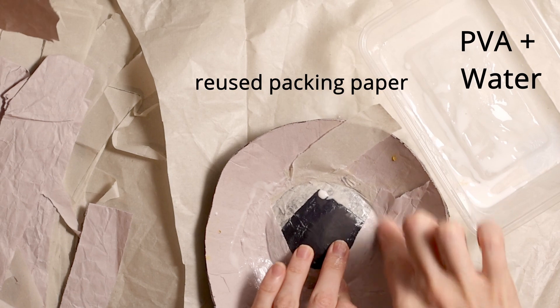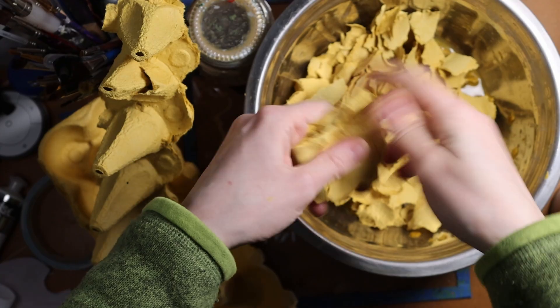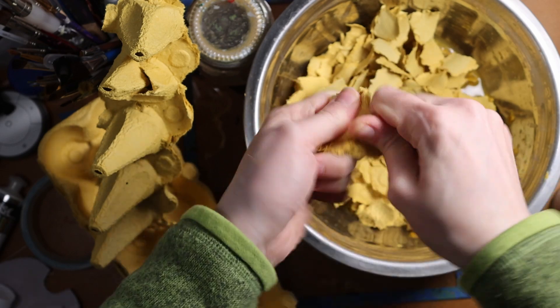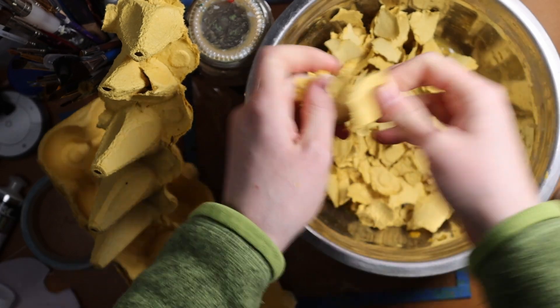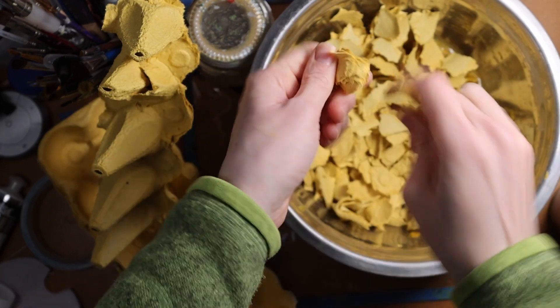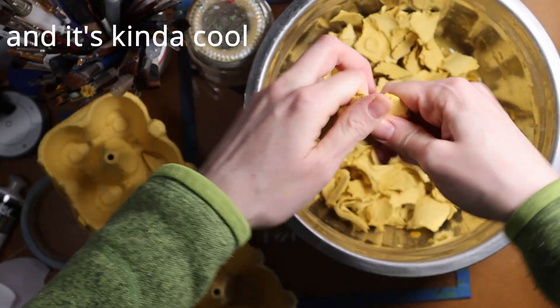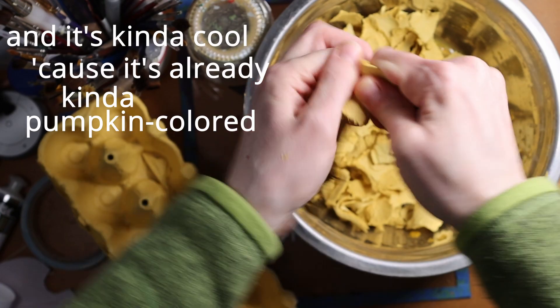And now for paper mache pulp. Just tearing up these egg cartons as fast as possible to get them soaking, because the goal is to take all these little fibers apart and use them as the structure with some glue. And it's going to be cool because it's already kind of pumpkin colored vaguely.